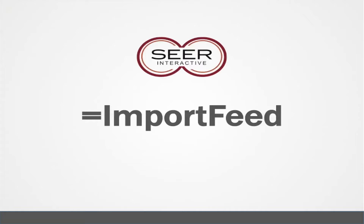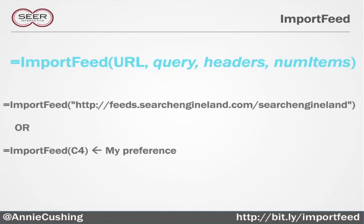I'm going to start with importfeed because it's the easiest. All you need is the URL of the feed — that's it. Everything in italics is optional, so don't worry about them. There are two ways you can structure your importfeed function: you can either embed the URL into the function wrapped in double quotes, or you can put the URL in a separate cell and reference it that way. I do that throughout the presentation because it's neater and also easier to troubleshoot.